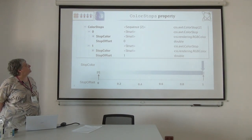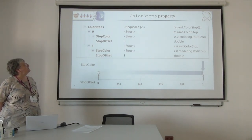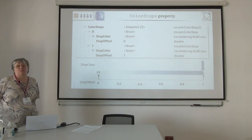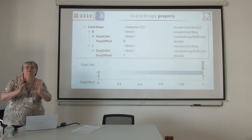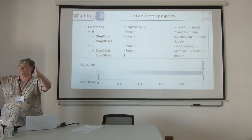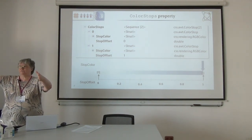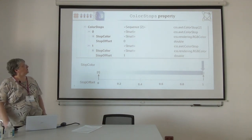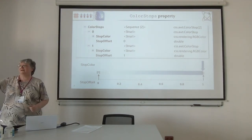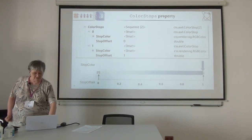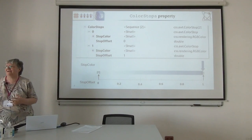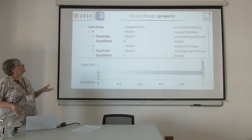A color stop is a struct with two components. One is a stop color that gives you, as its name says, the color. The second one is a stop offset. This describes the color transition position, which is relative and goes from 0 to 1. The stop offset says where the color is located. In this case we have a color at the start and a color at the end. When you see this you have surely an idea how we get a multi-color: we simply introduce more of these color stops.